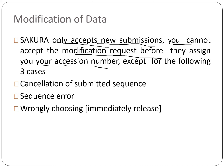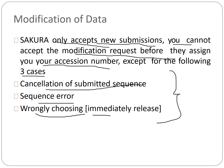SAKURA is another submission system similar to Sequin and BankIt. Importantly, SAKURA only accepts new submissions — it does not accept modification requests before an accession number has been assigned. You need to receive your accession number before you can modify your submitted sequence. There are three reasons you may not receive an accession number: cancellation of the submitted sequence, a sequence error, or wrongly chosen submission options. Check through all of these reasons if you do not receive your accession number.